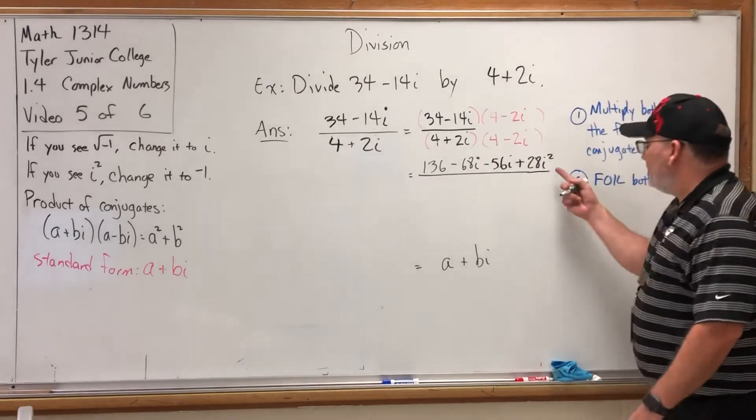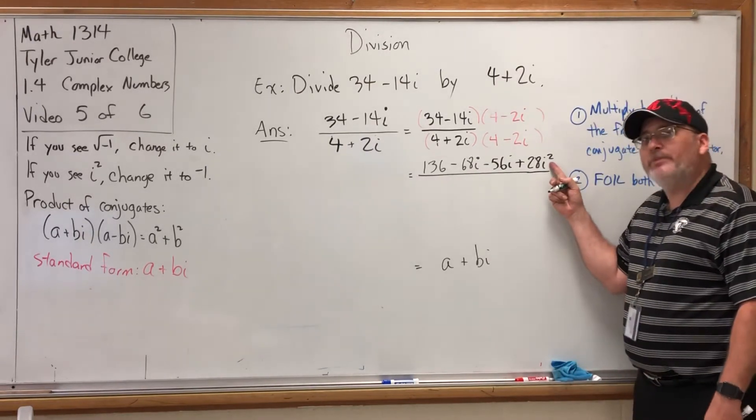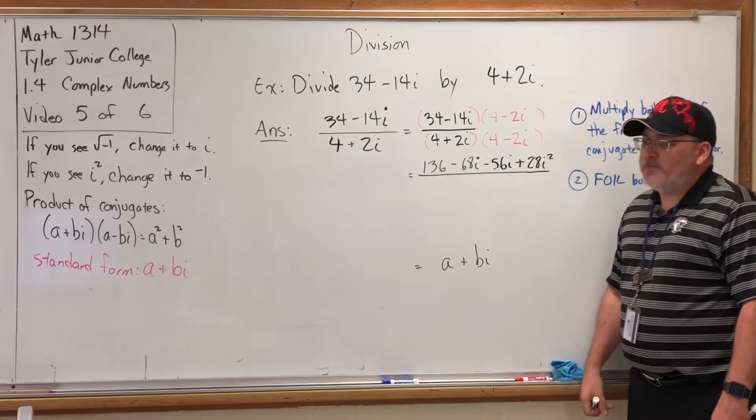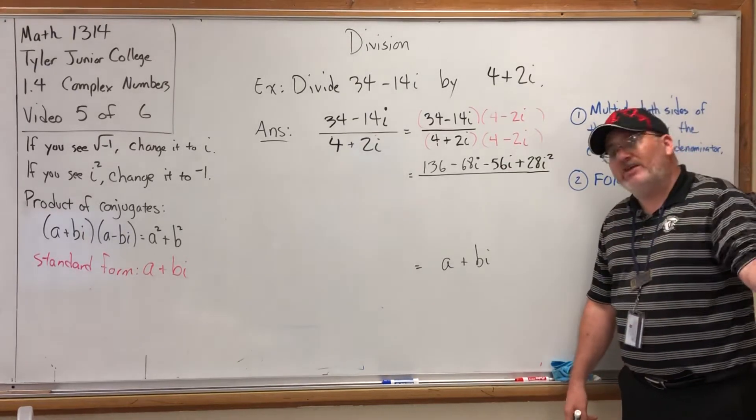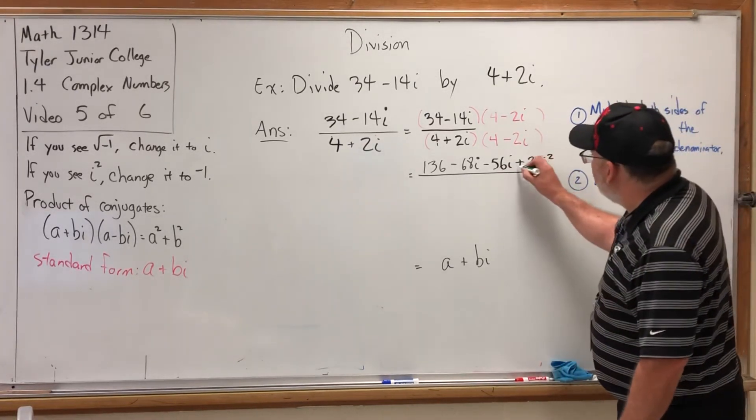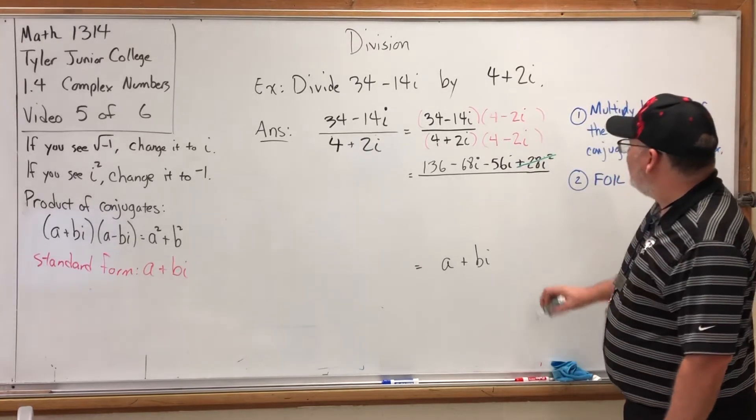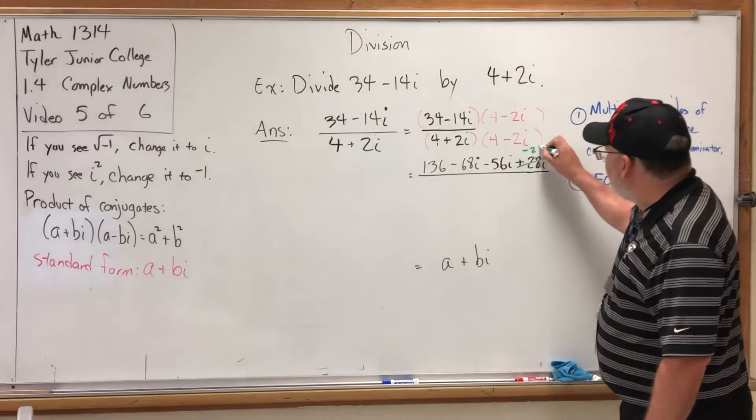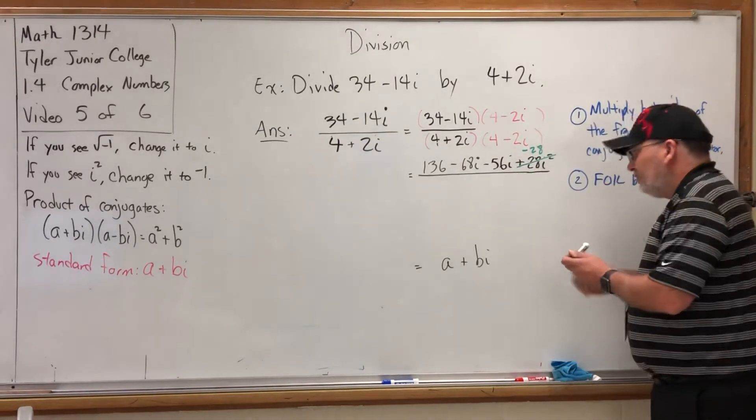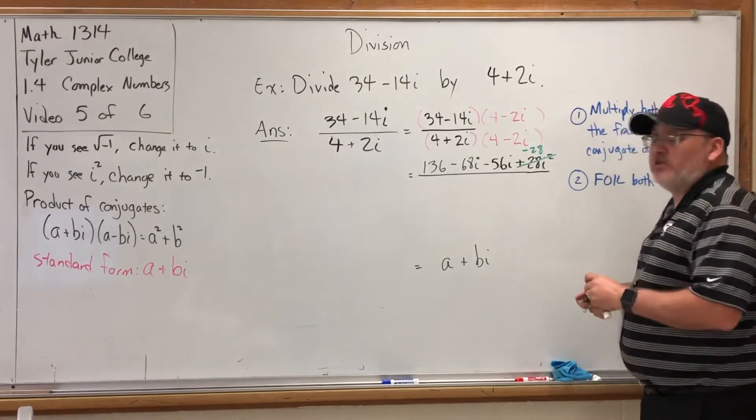The +28i² becomes +28 × -1, which is -28. So let's cross out the +28i² and replace it with just a -28. We'll combine like terms in a minute, but we're still FOILing.